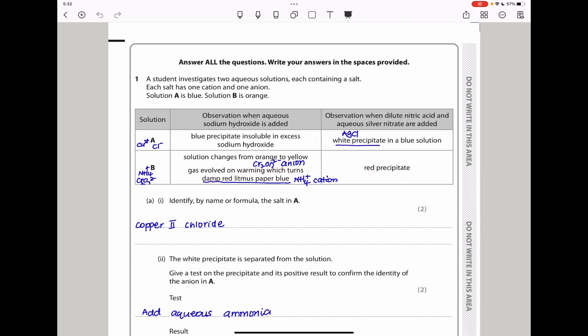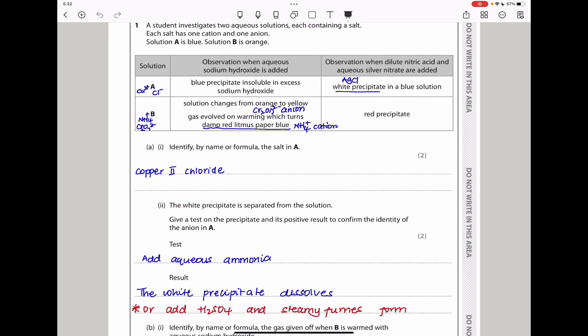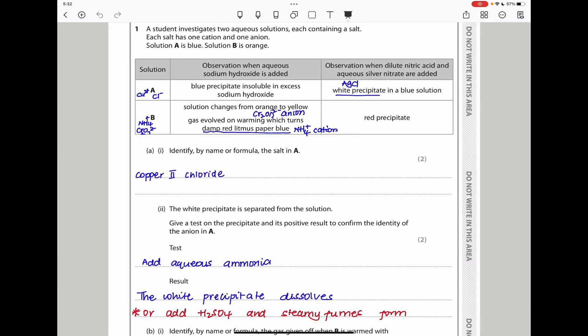A1 says identify by name or formula the salt in A. From this information, I can see because it was a blue precipitate which was insoluble in excess sodium hydroxide, this is supposed to be copper 2+. And they gave us this one here which shows the silver chloride, meaning there was a chloride anion, so it should be copper 2 chloride.